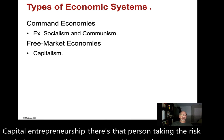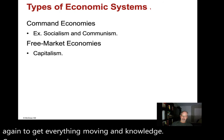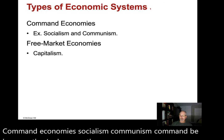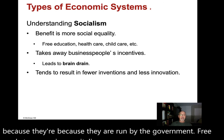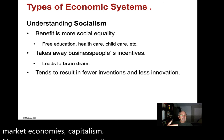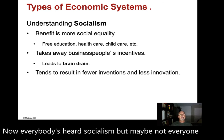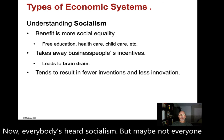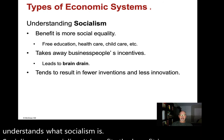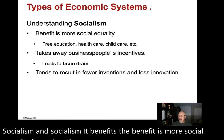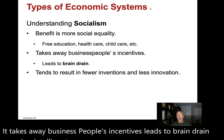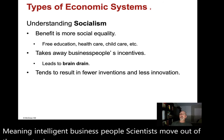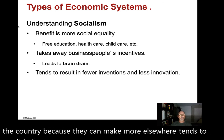Command economies include socialism and communism — they are run by the government. Free market economies include capitalism. In socialism, the benefit is more social equality: free education, healthcare, and childcare. But it takes away business people's incentives and leads to brain drain, meaning intelligent business people and scientists move out of the country because they can make more elsewhere. This tends to result in fewer inventions and less innovation.